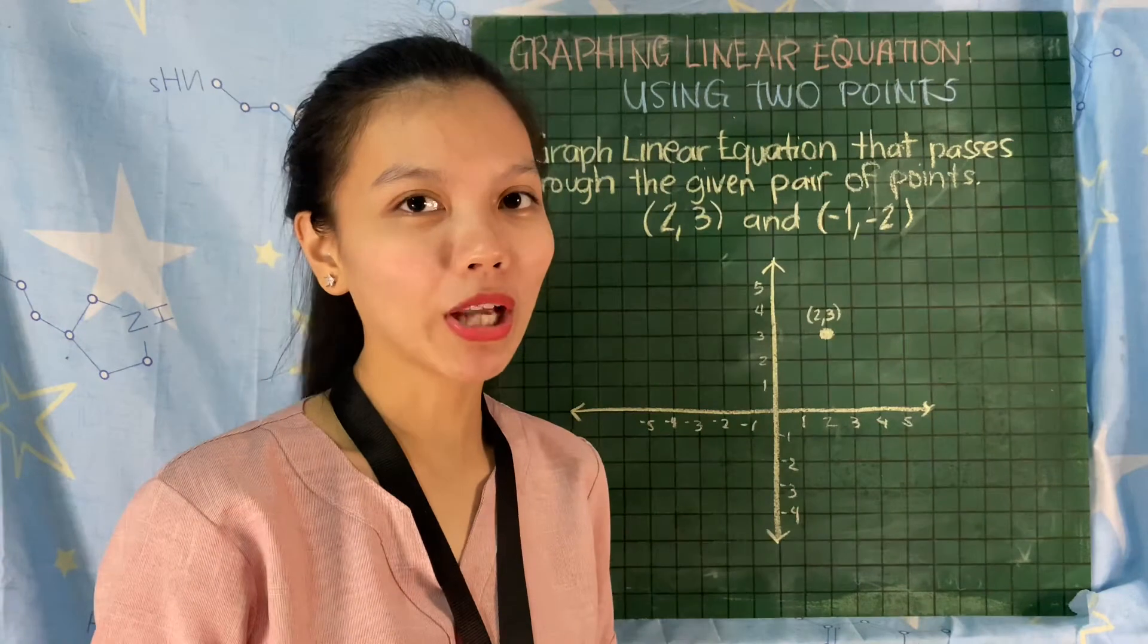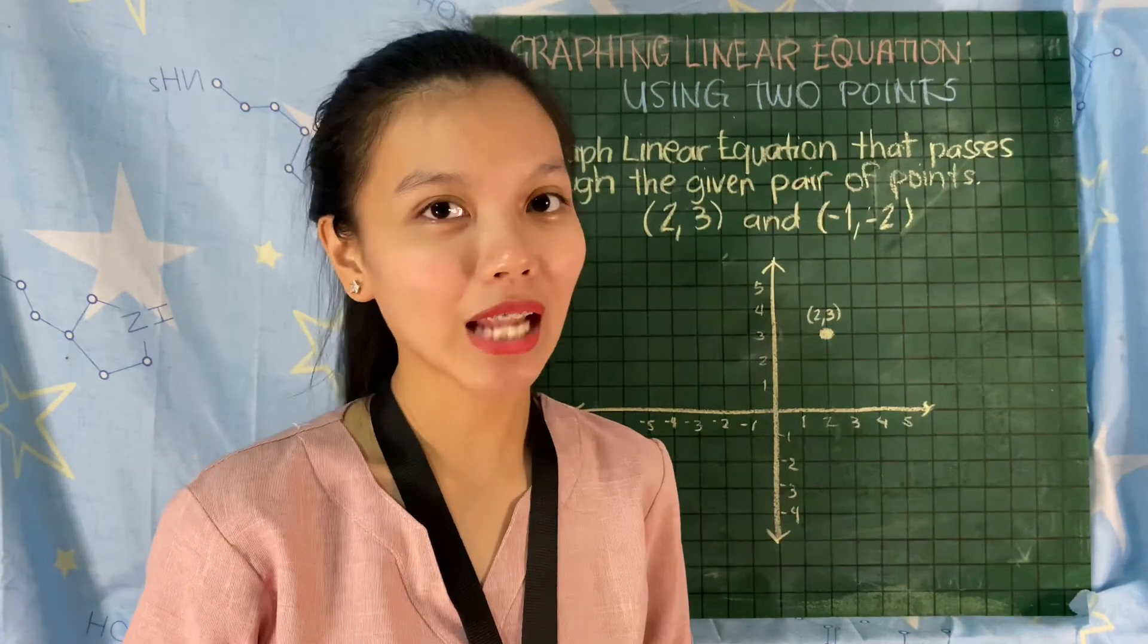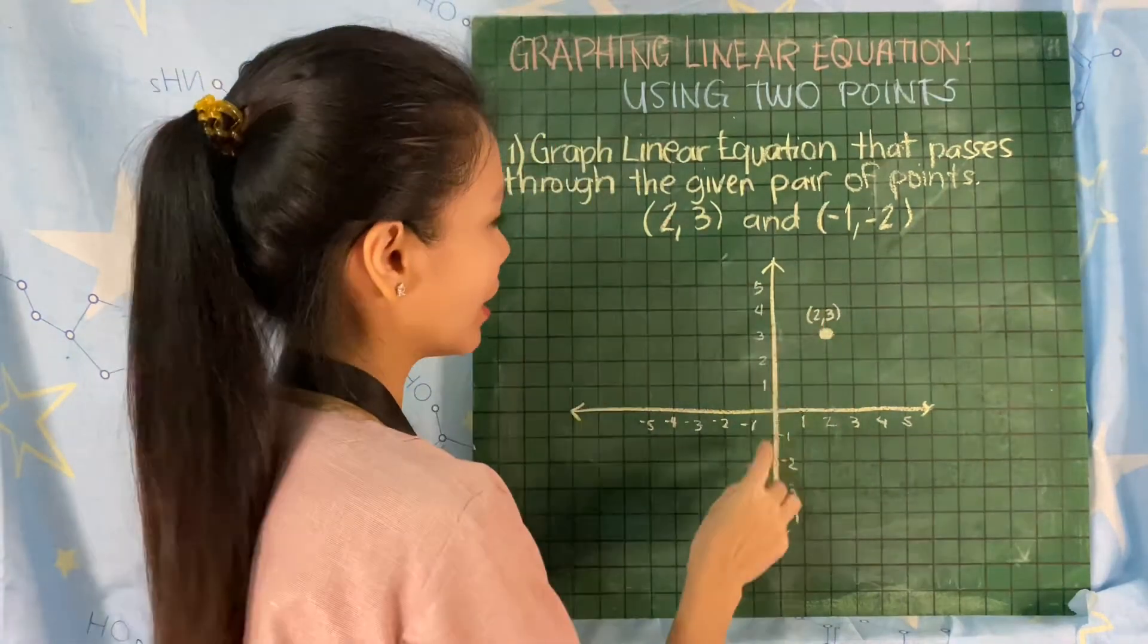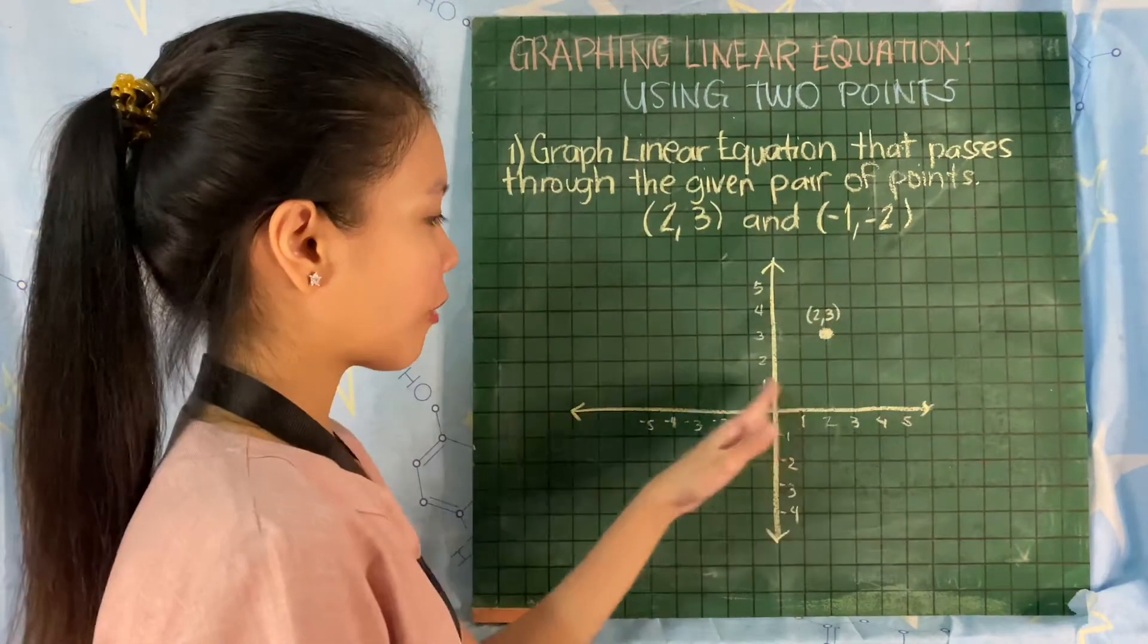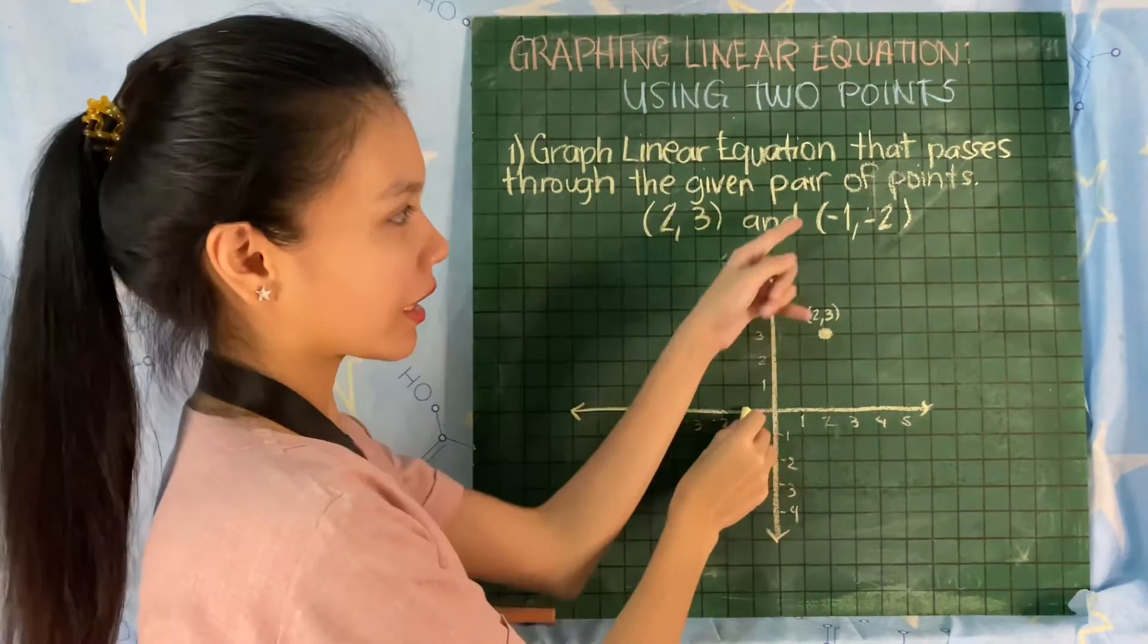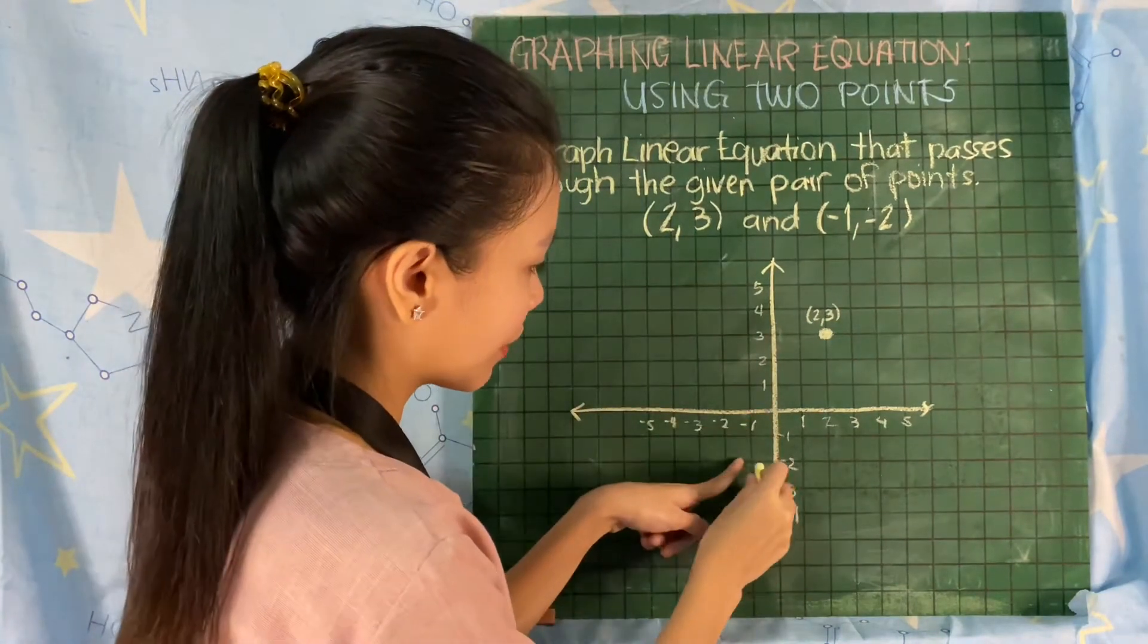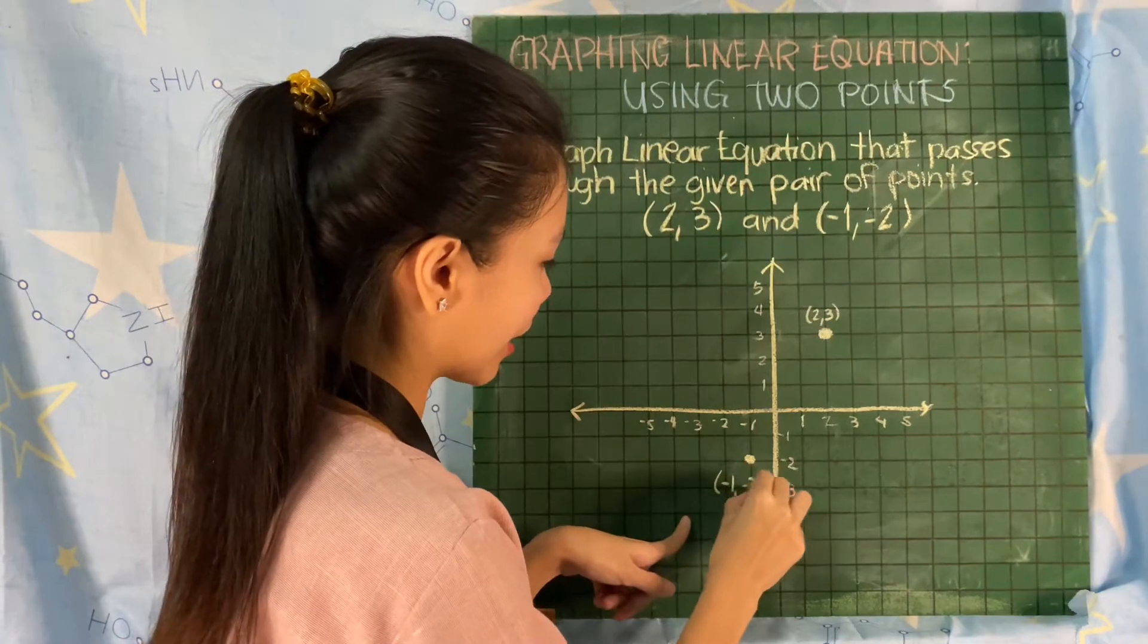Then the second point, we have (-1, -2). That is located in our quadrant 3. Very good. We have negative 1 on the x-axis, negative 2 on the y-axis. Negative 1 is on the left side and negative 2 is below the origin. So we have the point (-1, -2).